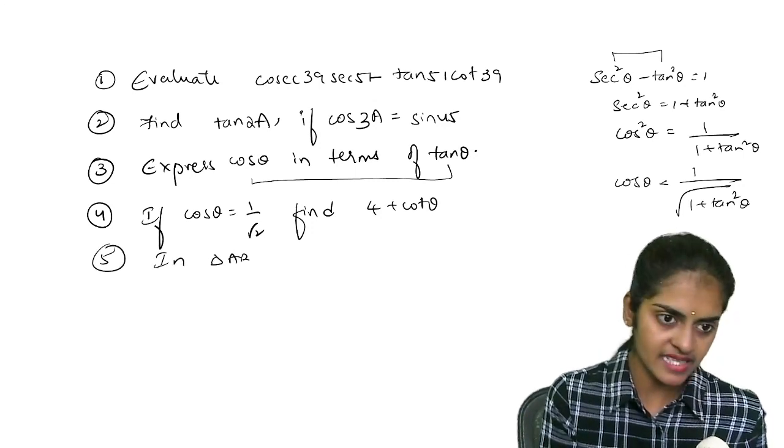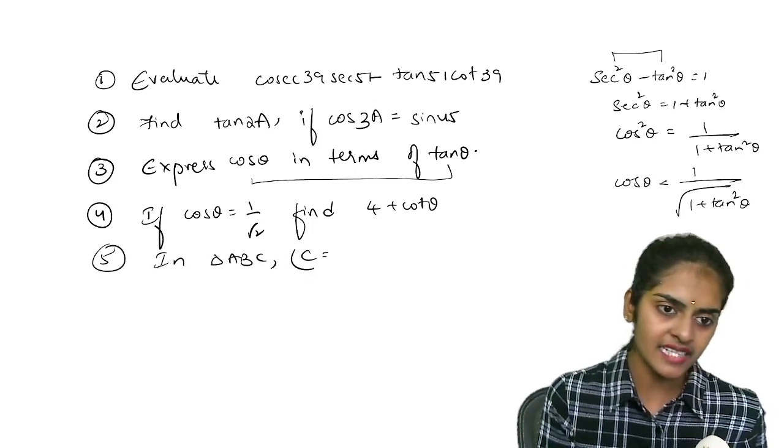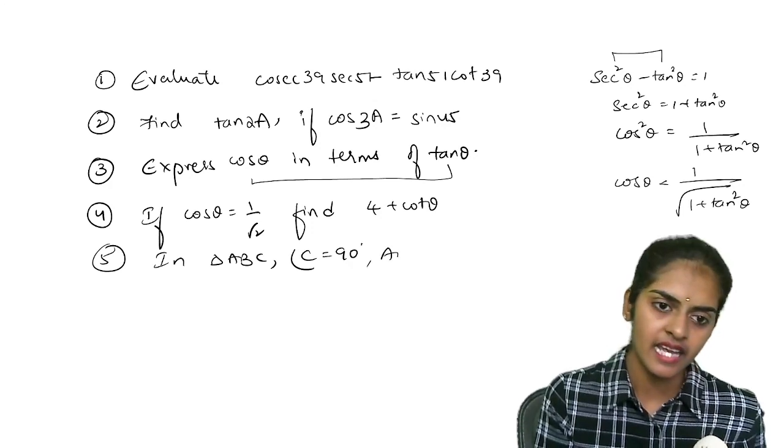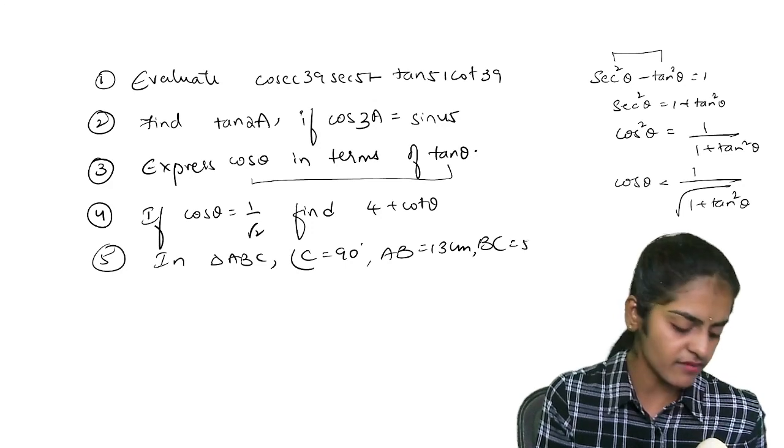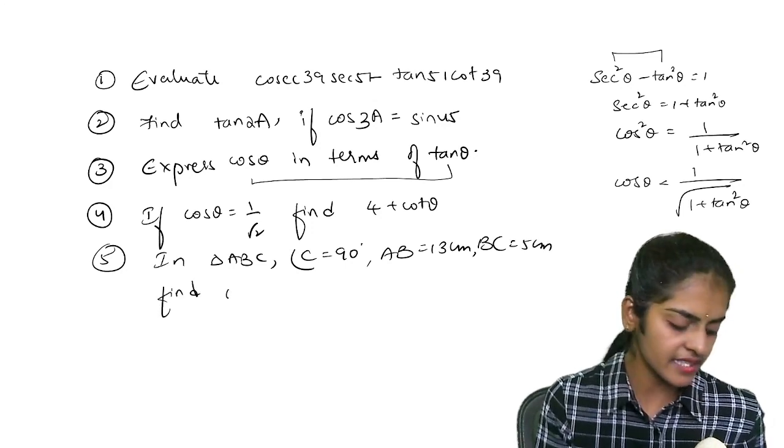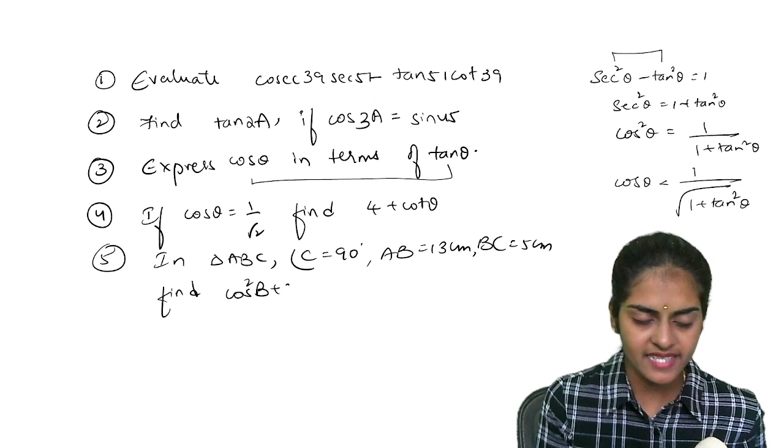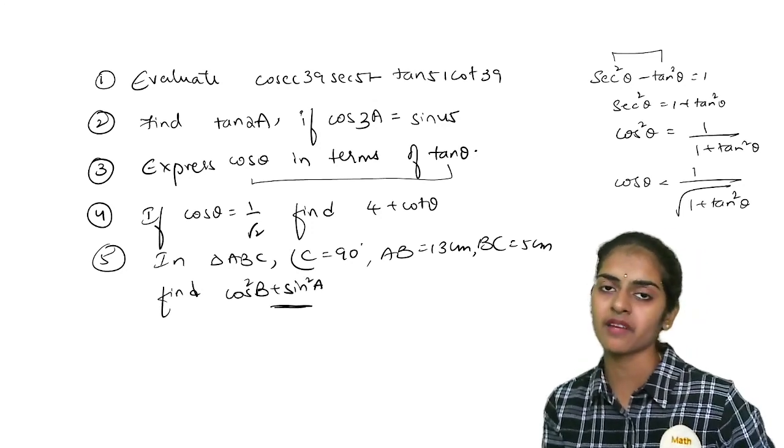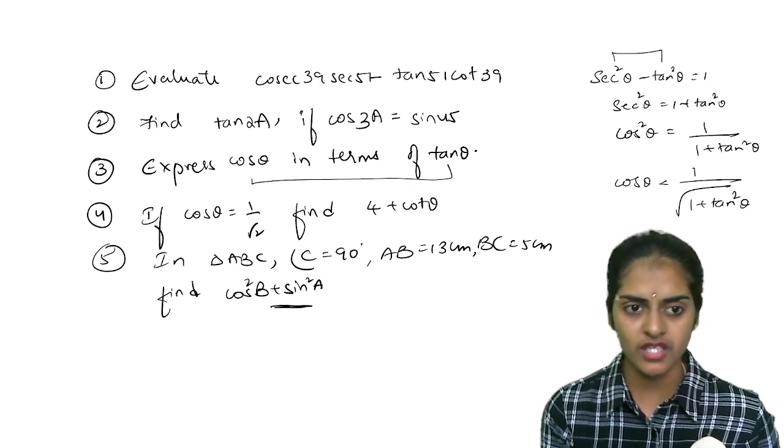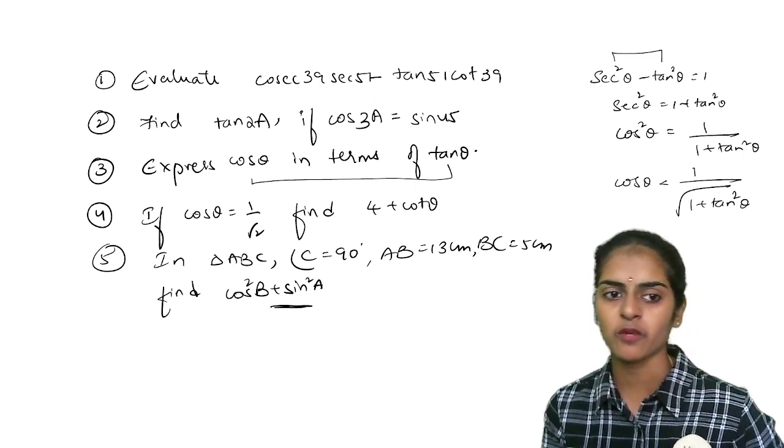In triangle ABC, angle C is 90 degree, AB is 13 centimeter, BC is 5 centimeter. Find cos square B plus sine square A. So these are the model questions. Here you will use Pythagoras theorem and find. So I am giving you only 5 questions. These are the most important model questions.